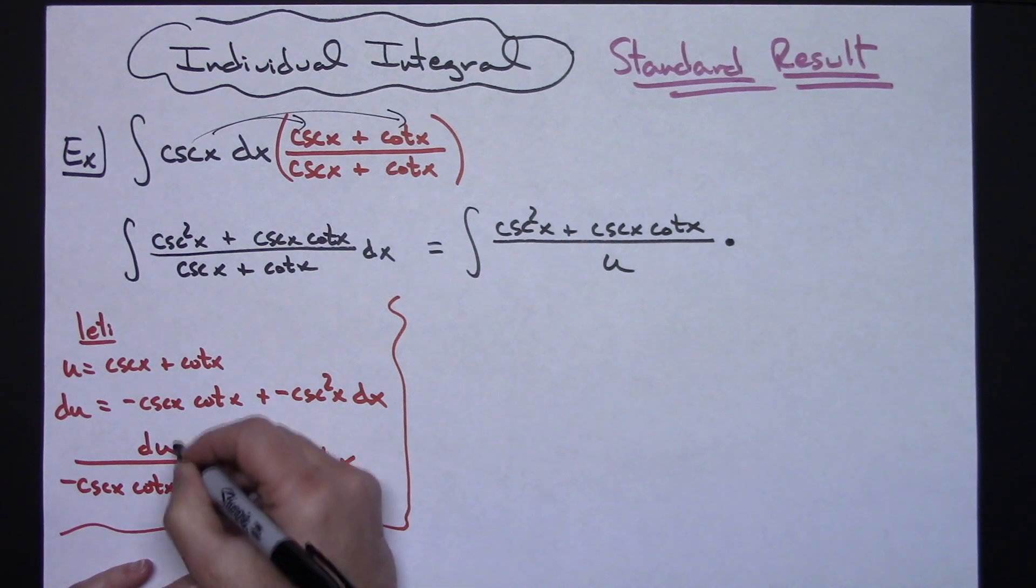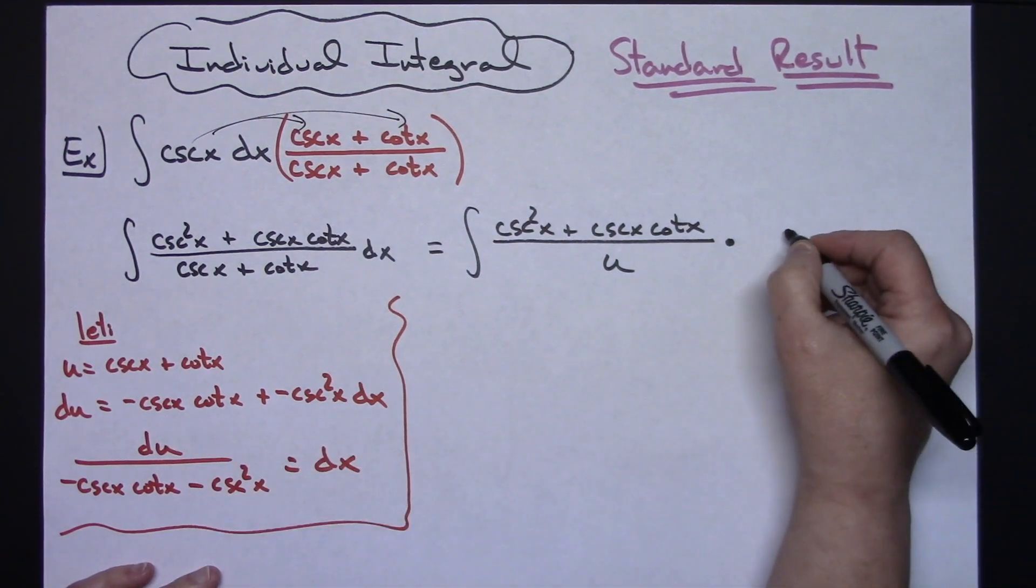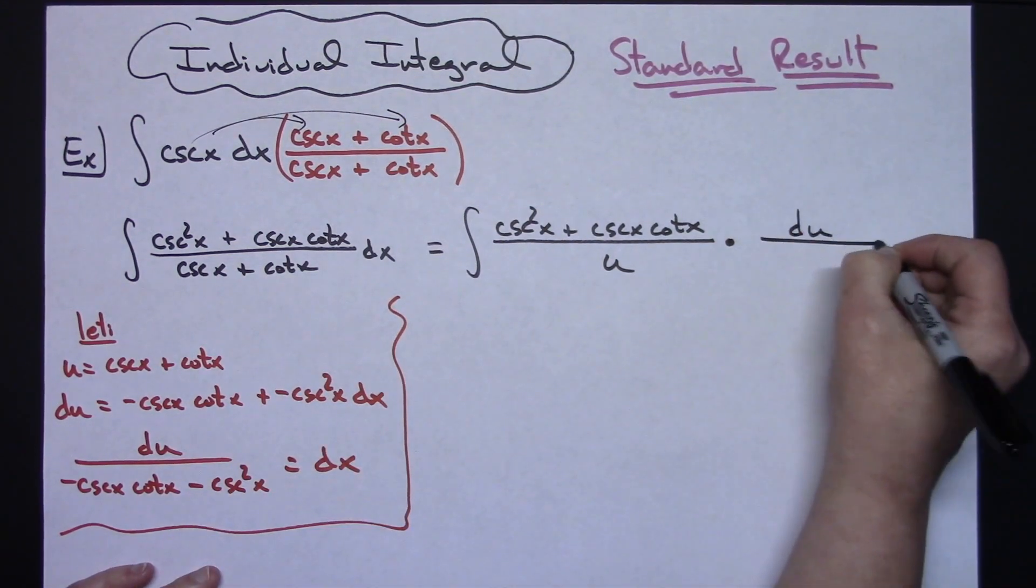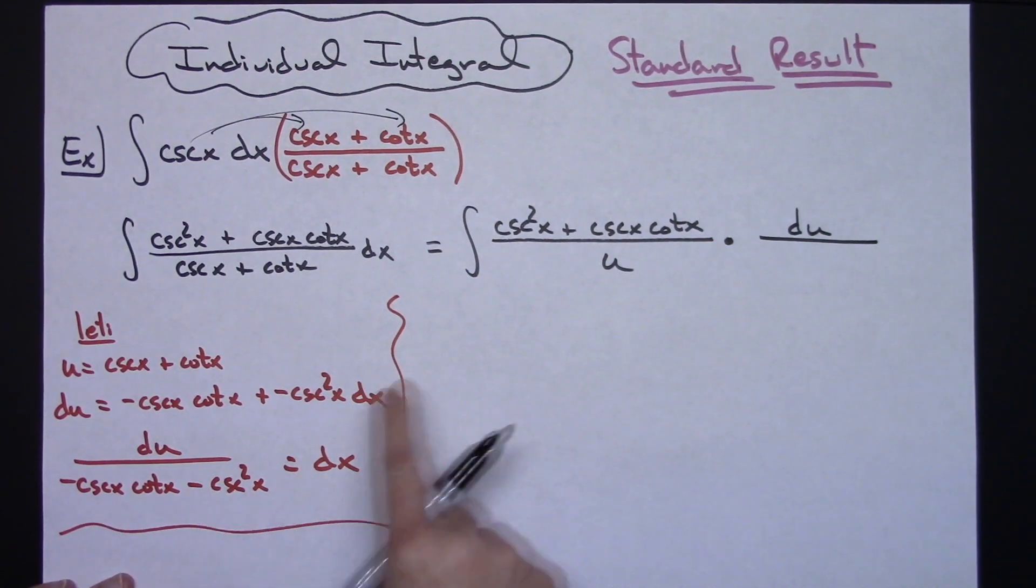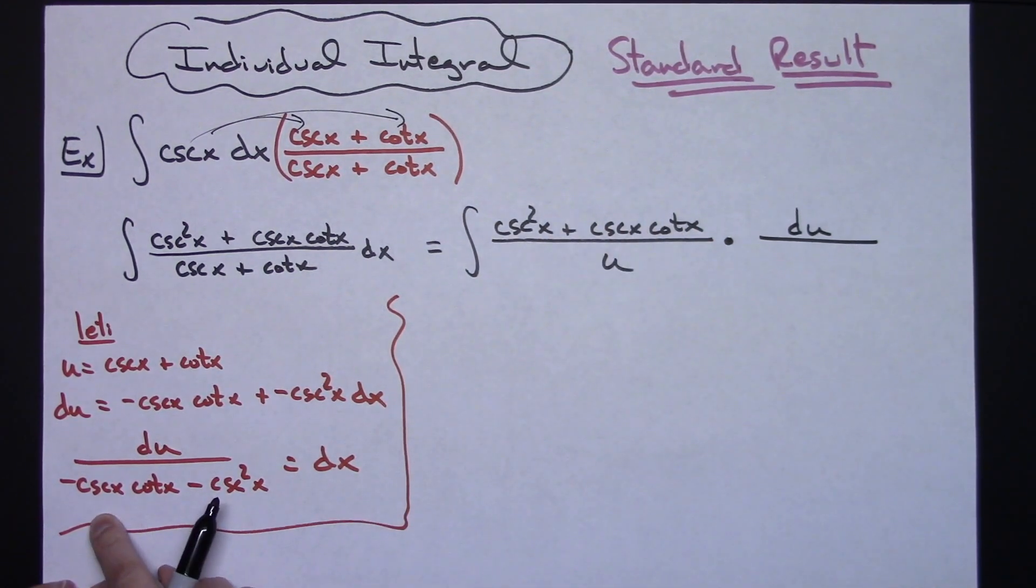For dx, we substitute du over... Now what I'm going to do is make this match, since this is all positive and this is all negative.